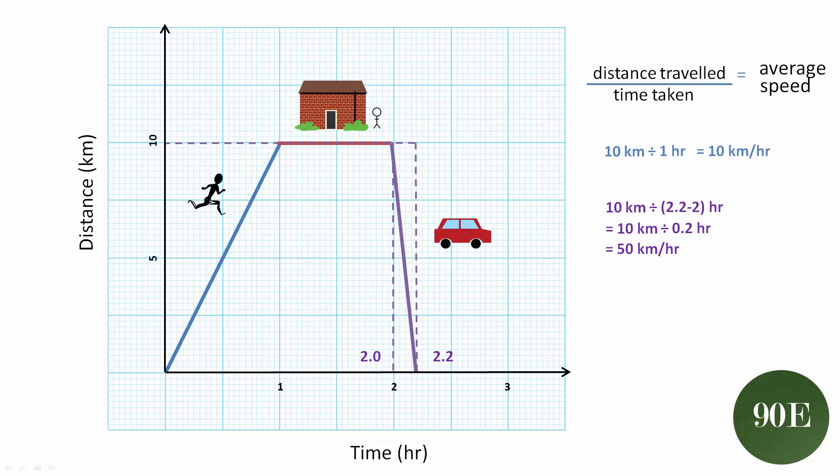Now it's always useful when doing any calculation to look at the numbers just to make sure they make sense. So here we've calculated that the average speed of the return journey is a lot faster than the speed of the original journey, and looking at the gradients, we can confirm that that was definitely the case.